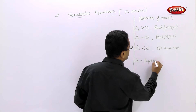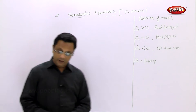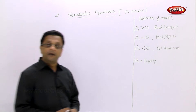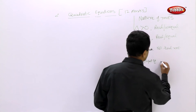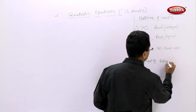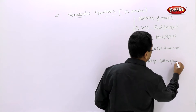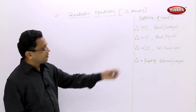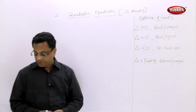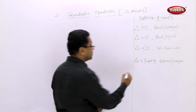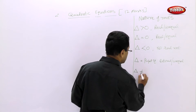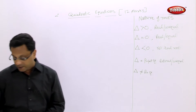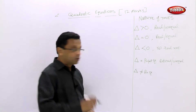If the discriminant is a perfect square, then the roots are rational and unequal. If delta is not a perfect square, then the roots are irrational.